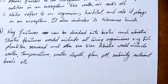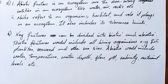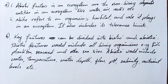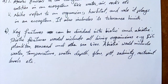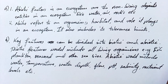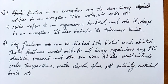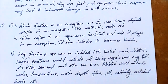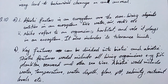Question 10B: describe the key features in an ecosystem in a water body like a lake, river, or pond. The key features can be divided into biotic and abiotic. Biotic features include all living organisms, e.g. fish, plankton, and seaweed. Abiotic features include water, temperature, water depth, flow, pH, salinity, and nutrient levels. You can add more to what I've written — this is what I could think of when going through this paper.